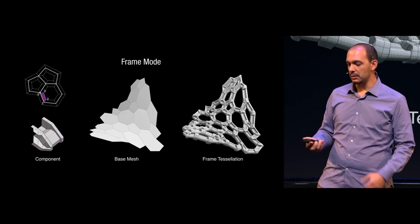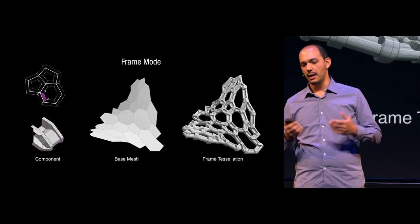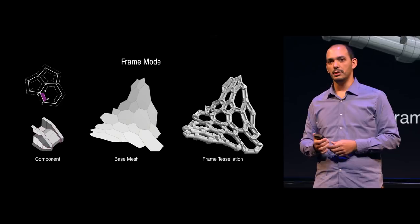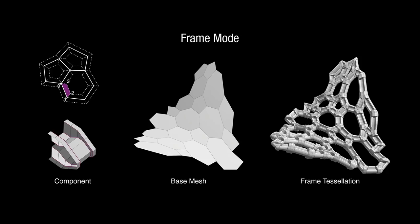Similar but a bit different is the frame mode. Frame mode is like a customizable version of the wireframe modifier — you have almost the same settings, but you can define the aspect of your wireframe. You create a component that is multiplied internally to each polygon and also multiplied along the boundary.